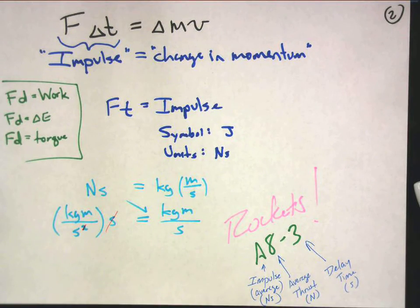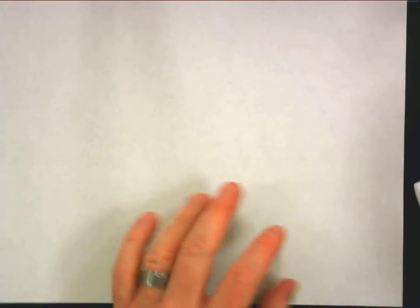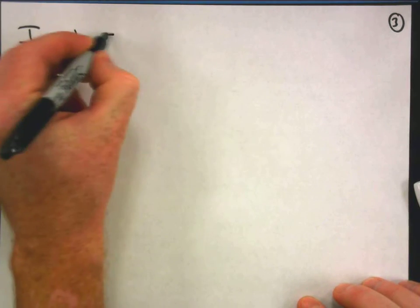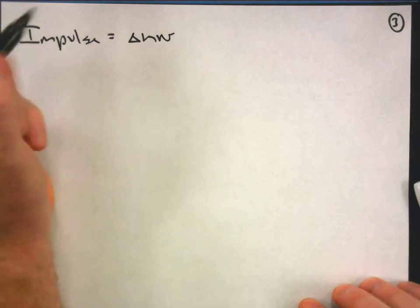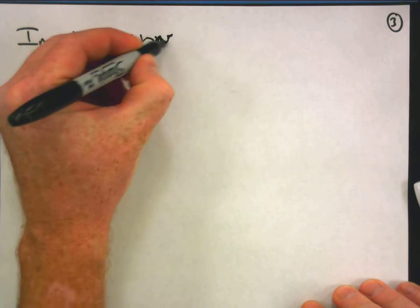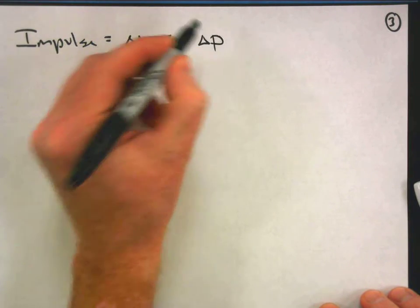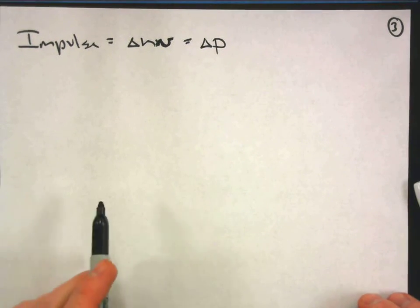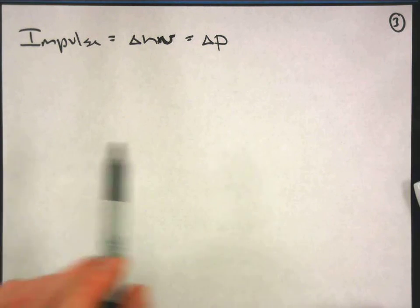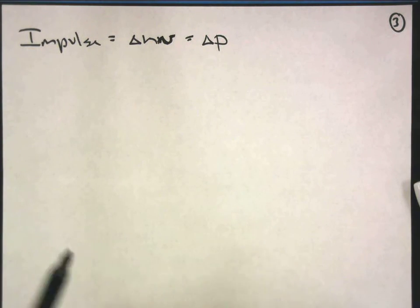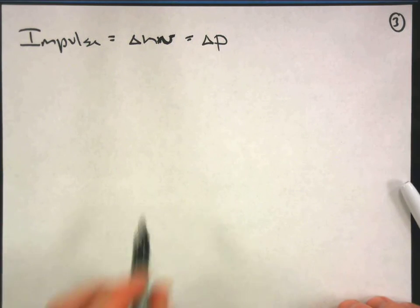So what can we learn from this? We know that impulse is going to produce a change in momentum. Really that's a change in momentum. We want to know what to expect, want to know how this is going to affect the rocket.